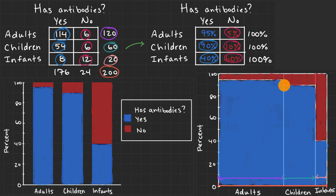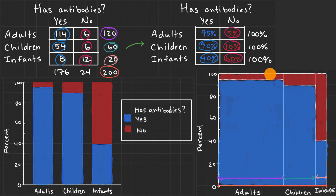It's also easy to look at the mosaic plot and see that, of the total number of people who don't have antibodies — the red area — even though we tested the fewest number of infants, it looks like infants make up a large chunk of the total number of folks who don't have antibodies. The whole point of this video is to understand why a segmented bar chart or mosaic plot will be useful. In future videos, we'll get more practice analyzing them.